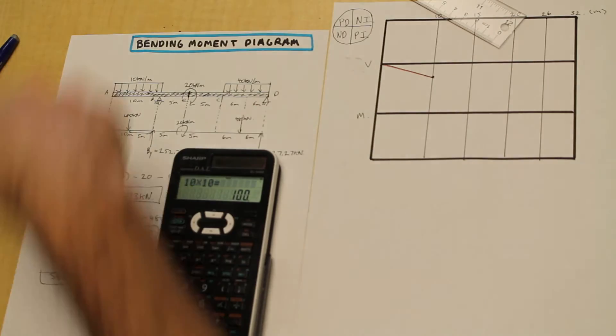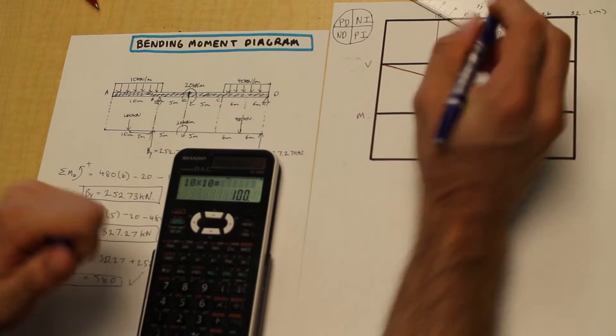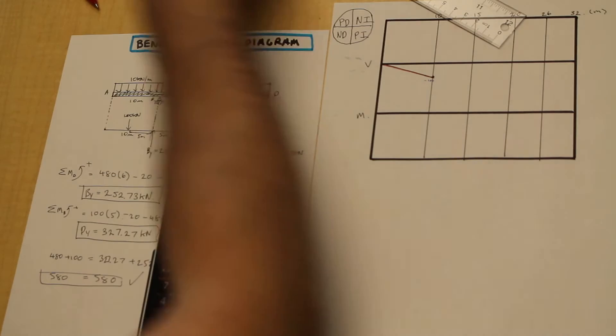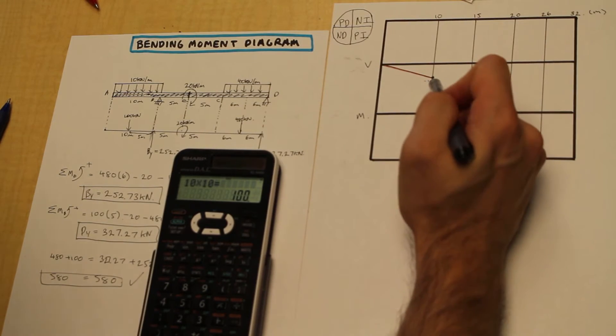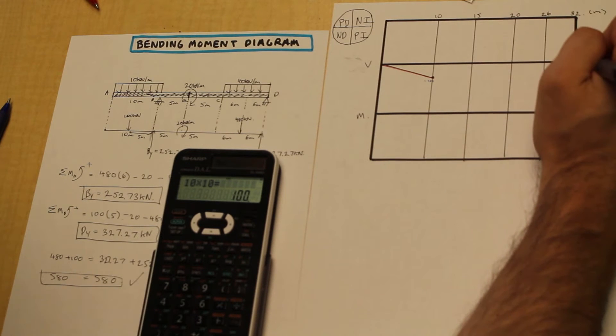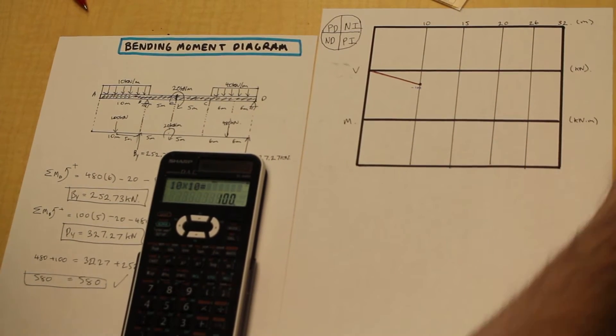So we're going to draw it because it's a distributed load. It's decreasing, and we're going to draw a straight line. There we go. Perfect. And that is, you guys are going to want to label your points just so we know where we are. And we are at 10 meters now, X equals 10 meters from the left. And we're at negative 100, and this is going to be in kilonewtons. Kilonewton meters.